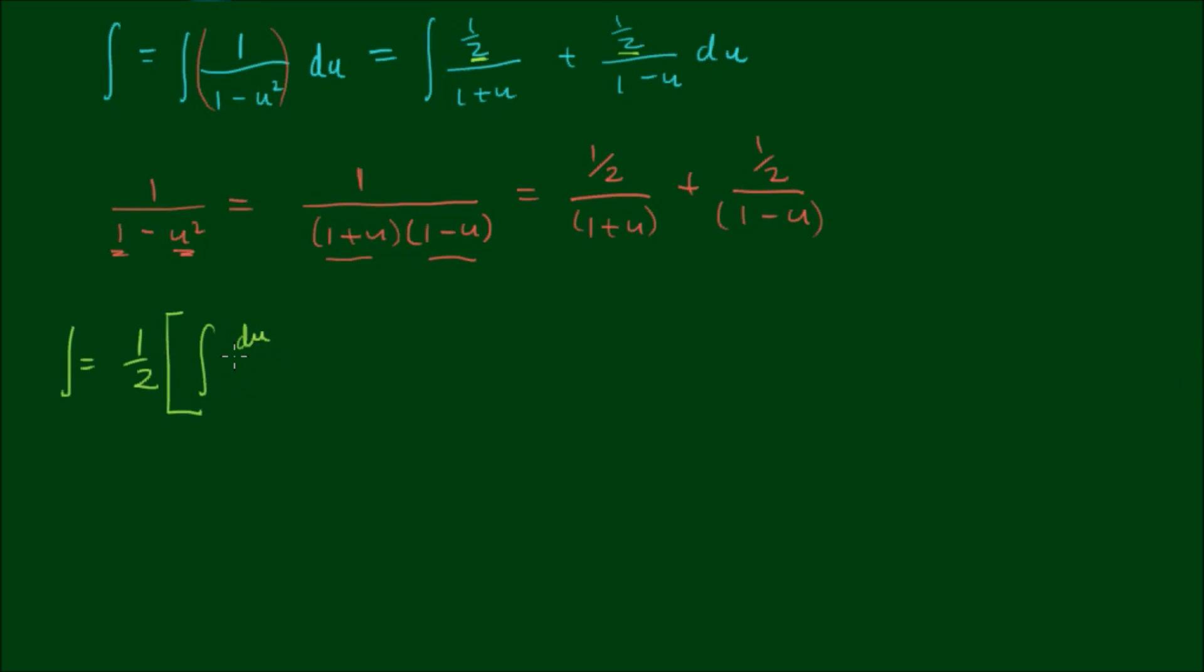So the integral is equal to... I'm going to bring the half out the front. So it becomes 2 single integrals of du on 1 plus u plus the integral of du on 1 minus u. And this evaluates to 1 half outside of the log of 1 plus u, and the second integral evaluates to minus the natural log of 1 minus u. And of course we have the integration constant c.